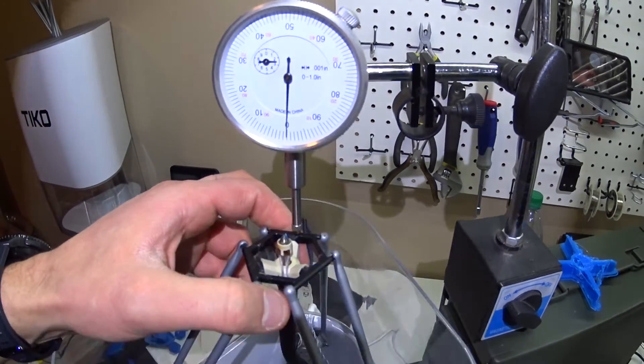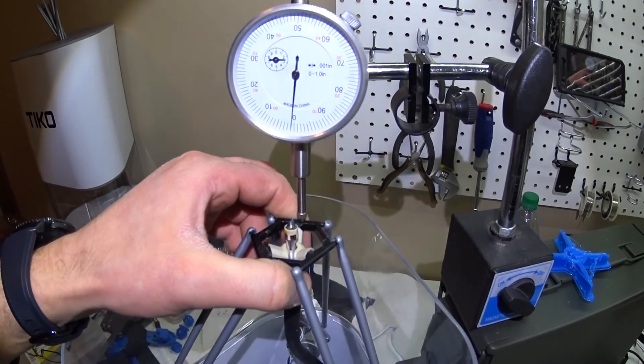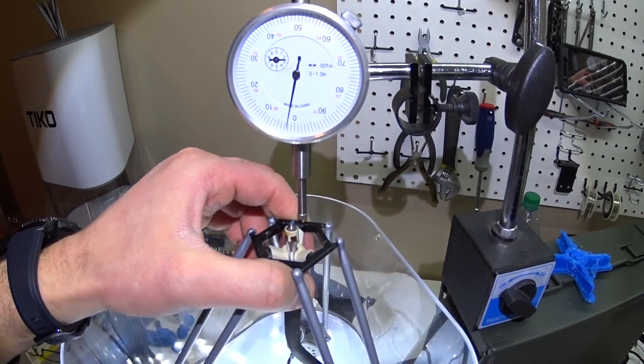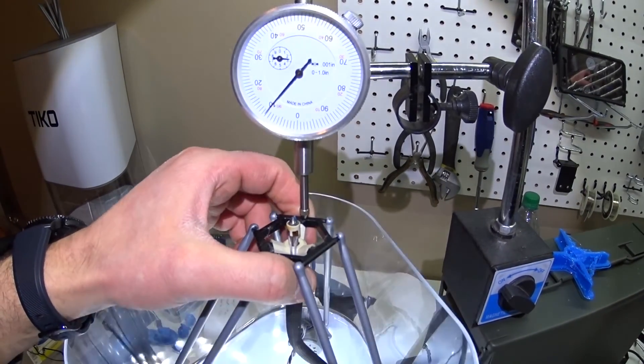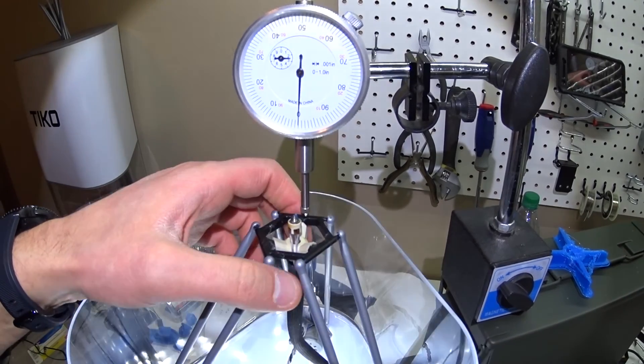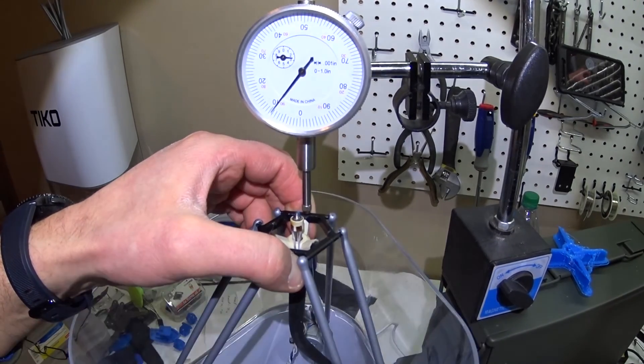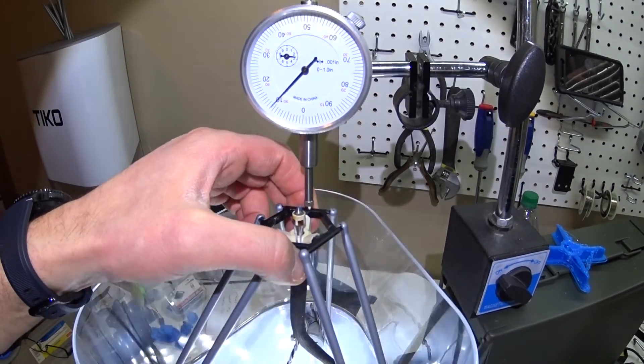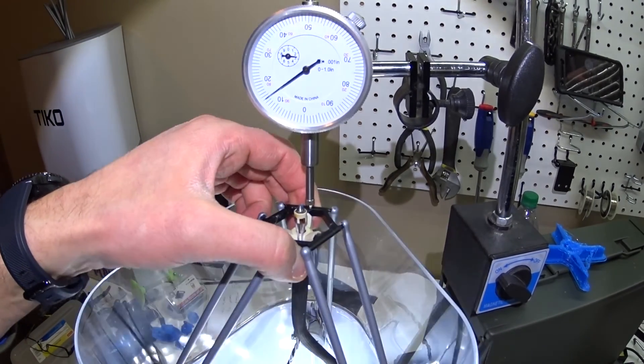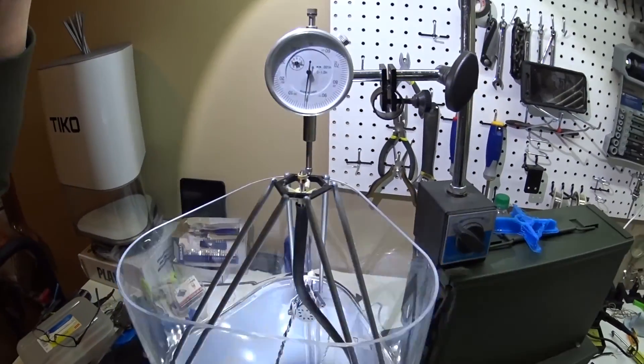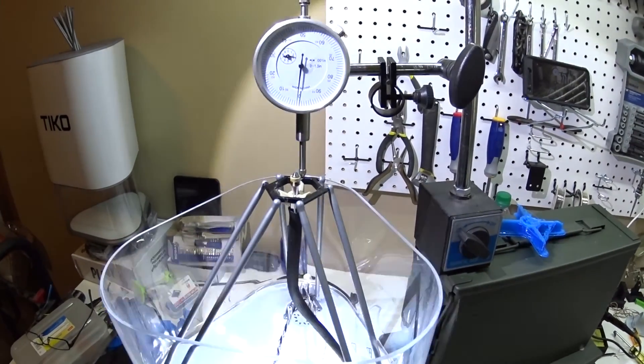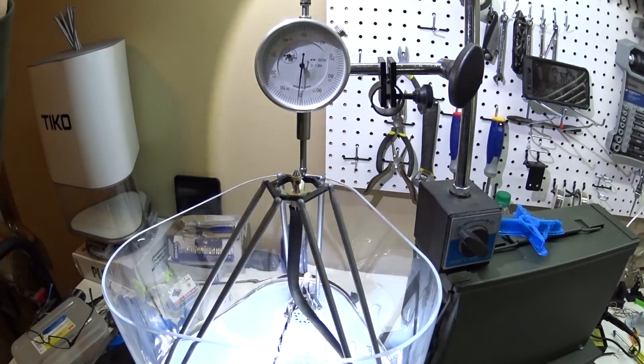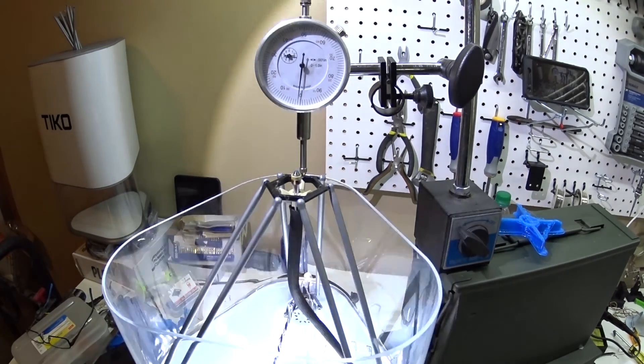I think it might be a better option if they can add backlash compensation. And if I pull up without moving the motor, I can get almost 15 thousandths. I thought that was interesting, and it could be what's accounting for such poor quality prints.